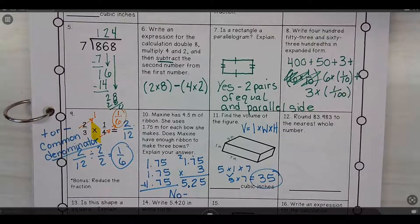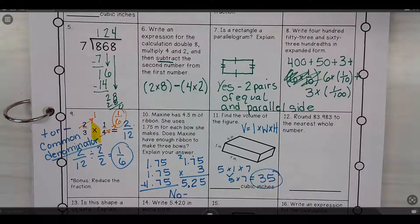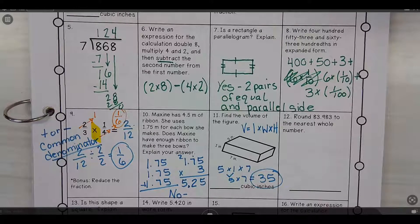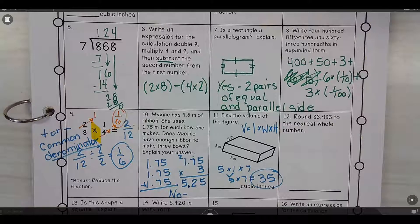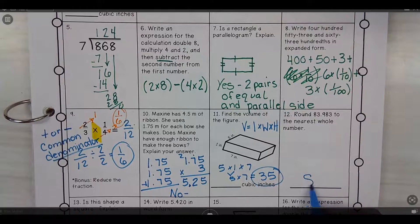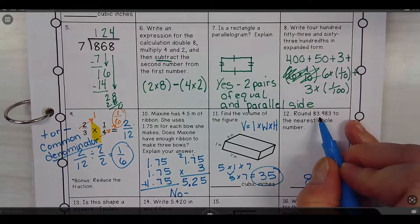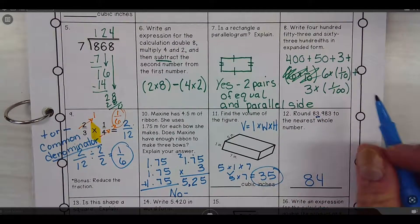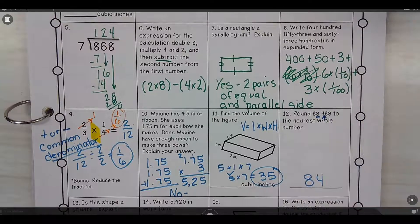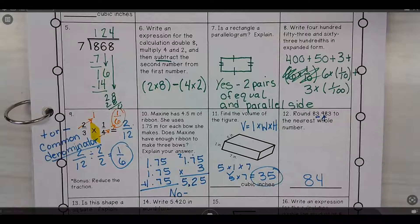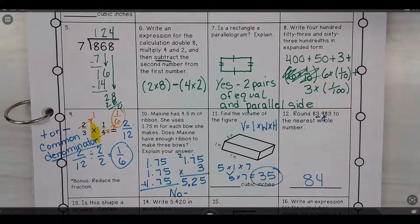Round 83.983 to the nearest whole number. It would be 84. The answer would be 84. So I would look at the nearest whole number, which would be right there. You have to look at the guy next door, which is nine. Nine would bump.